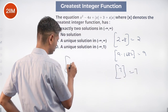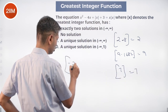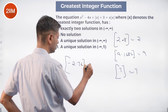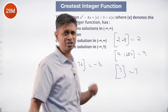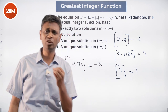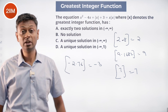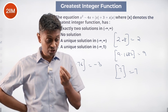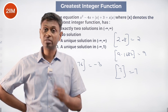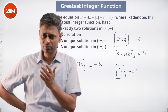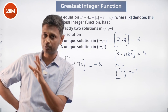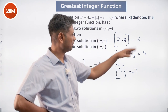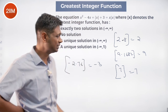Greatest integer of minus 2.76 is minus 3. The greatest integer less than or equal to the number — if the number is already an integer, it is the value itself; otherwise, it's the integer just below it. So for positive numbers we just leave out the decimal part. For negative numbers, the integer below minus 2.76 is minus 3.